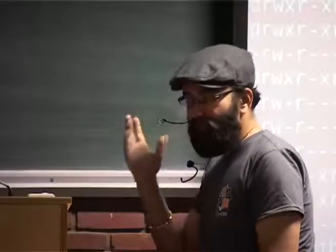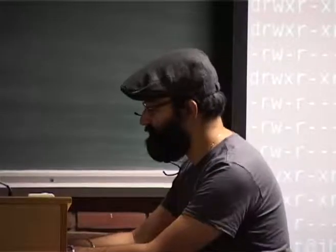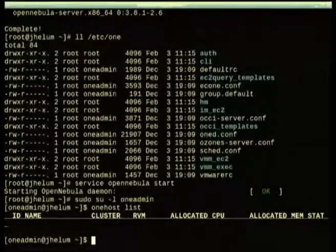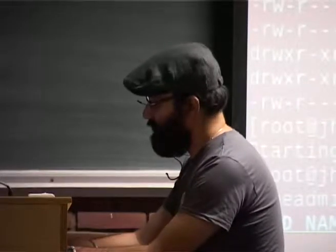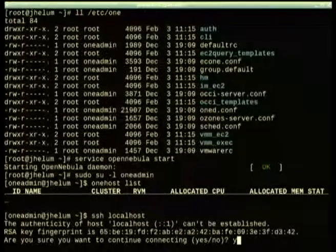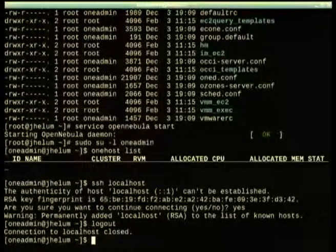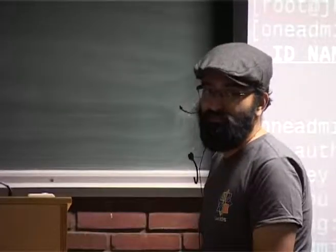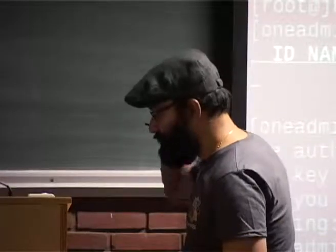OpenNebula comes with two interfaces: the command line interface and the web interface. We'll try and look at both. Change over into the oneadmin user, and we can now do 'onehost list' — we have no hosts in here at the moment. One of the reasons I like OpenNebula is that nodes run agentless. All communication between the controller node and compute and storage nodes is over SSH. You just need to make sure SSH isn't going to ask you to accept the key, and this can be automated.